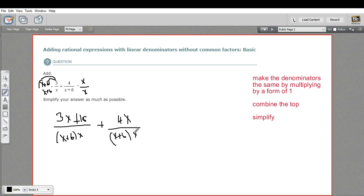Now we have like denominators, so we can just combine the tops. So I've got 3X, 4X, and 18. That is 7X—3X plus 4X is 7X—plus 18.